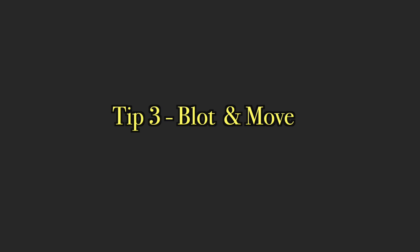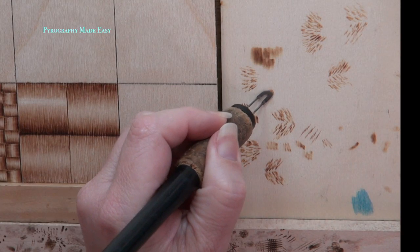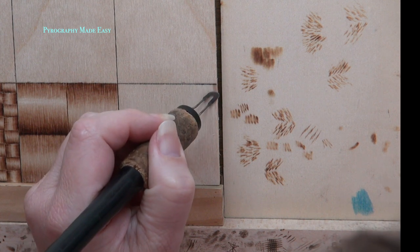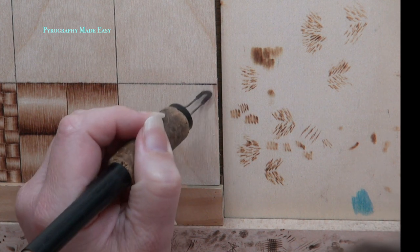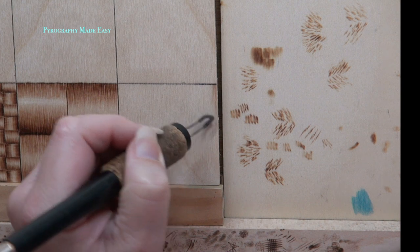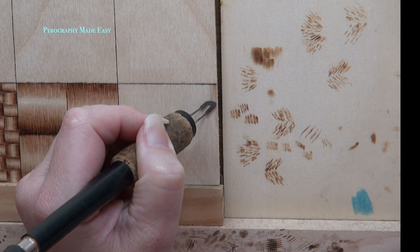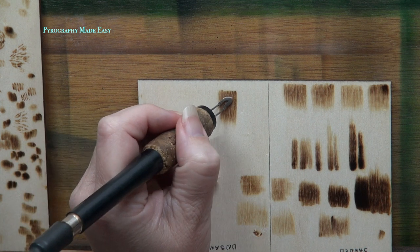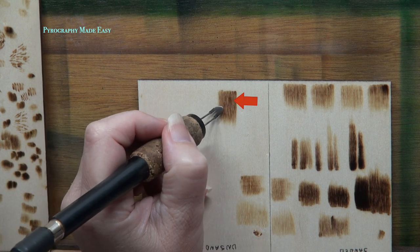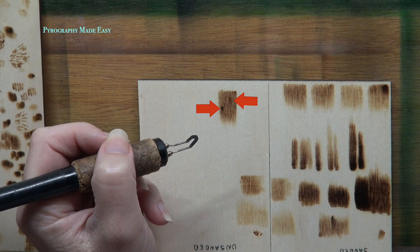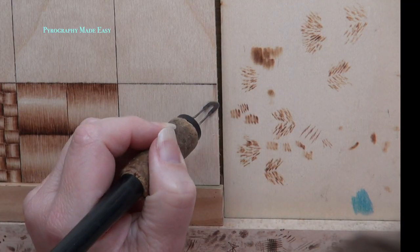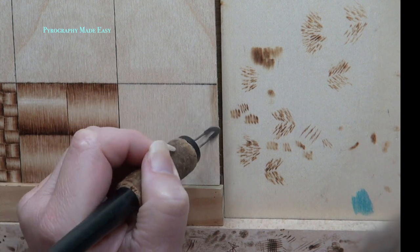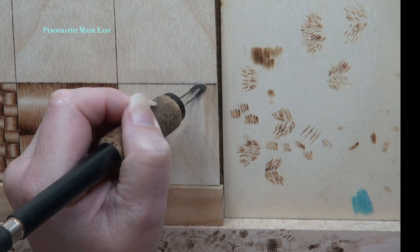Tip 3, blot and move. Just before you start burning on the board, always blot your pen tip on scrap wood. This will help remove any excess heat and prevent dark blotches from happening. Do the same if you pause from burning. This is what happens if you don't blot first. Once the pen tip comes into contact with the board, keep it moving. Don't pause or rest the pen tip on the board.